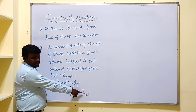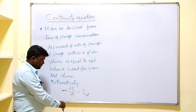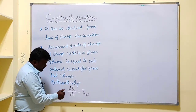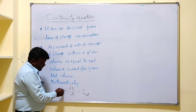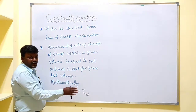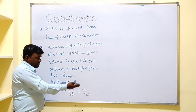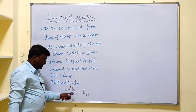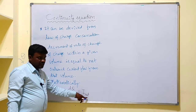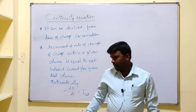Charge per unit time is nothing but current. The negative sign here represents the decrement, which leads to another form. Charge neither being created nor destroyed means any increment or decrement is transformed to another form. Here, the rate of change of charge leads to the net outward current flow from the given volume.